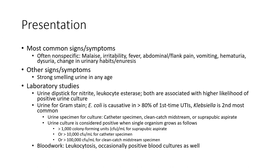Urine culture is considered positive when a single organism grows as follows: more than 1,000 colony-forming units per mL for suprapubic aspiration; or 10,000 colony-forming units per mL for catheter specimen; or 100,000 colony-forming units per mL for clean catch or midstream specimen.